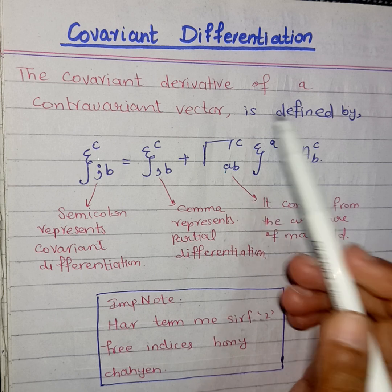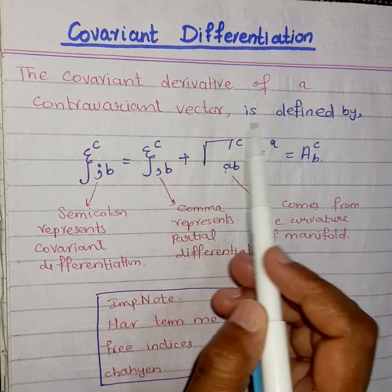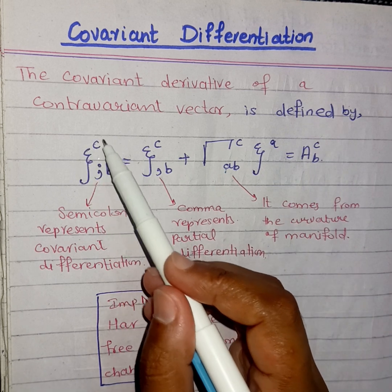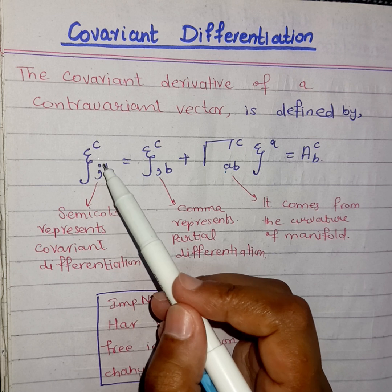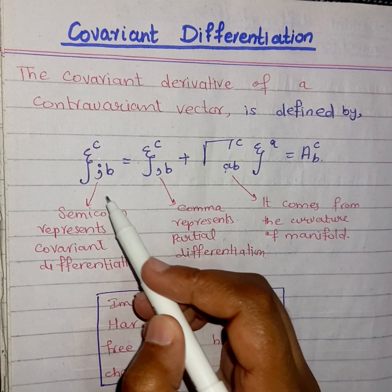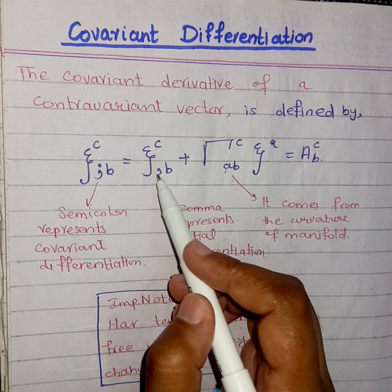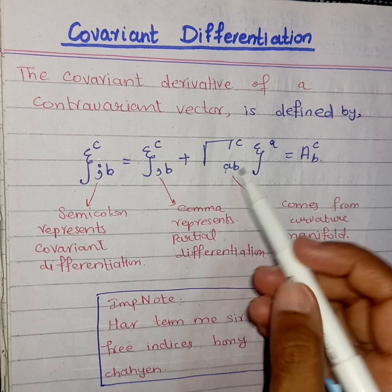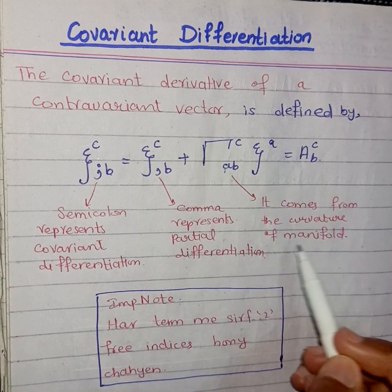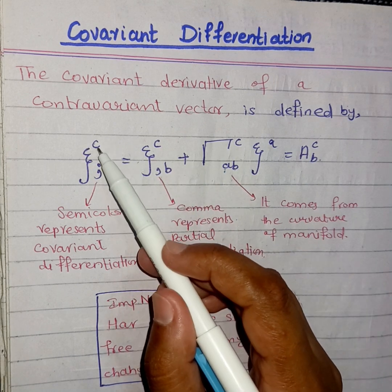The covariant derivative of a contravariant vector is defined as follows: we have a contravariant vector represented by Xi^c, and its covariant derivative with respect to b — the semicolon represents covariant differentiation — is equal to Xi^c comma b, plus a term involving the Christoffel symbol, which comes from the curvature of a manifold.